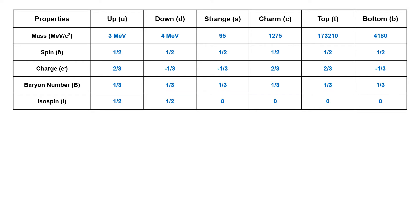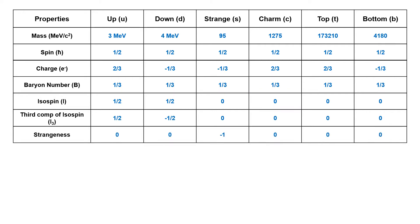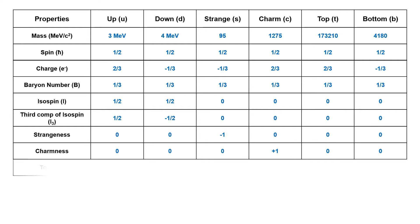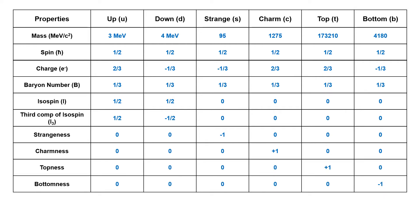The up quark has a third component of isospin of +1/2, while the down quark has a third component of isospin of −1/2. Strangeness is defined only for the strange quark; its strangeness is −1, whereas all the others have strangeness 0. Special quantum numbers have been defined for charm, top, and bottom quarks, which are called charm number, top number, and bottom number.